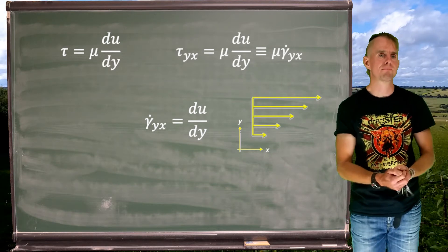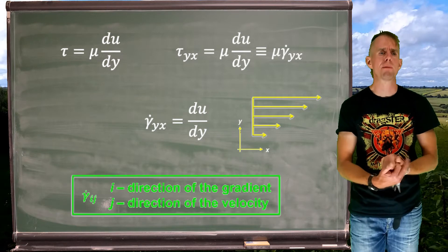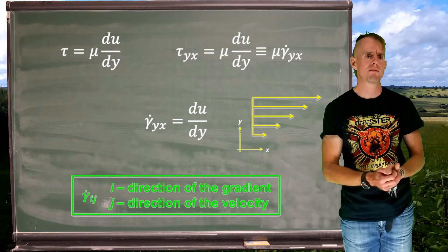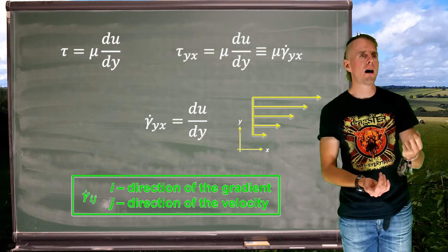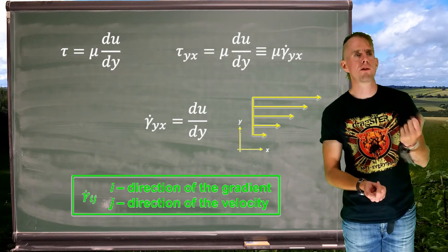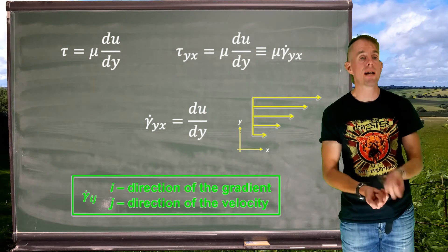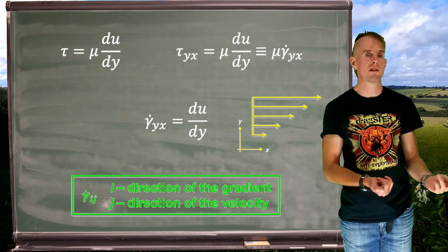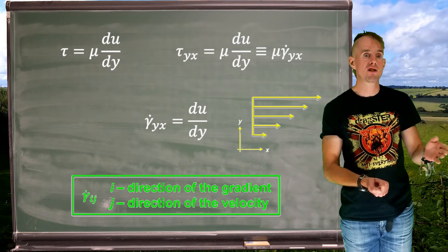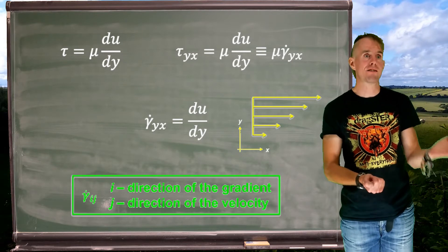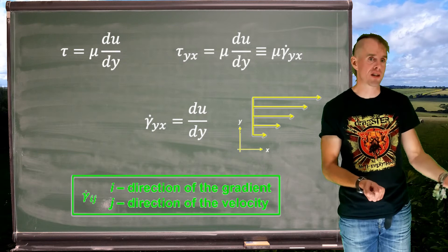So that's du by dy, which is gamma dot yx. So for any element of my rate of strain tensor, if we have gamma dot ij, i is the direction of the velocity gradient, j is the direction of the velocity. So gamma dot yx, just to recap, y is the direction in which the velocity is changing, x is the x-direction velocity that's actually doing the changing.